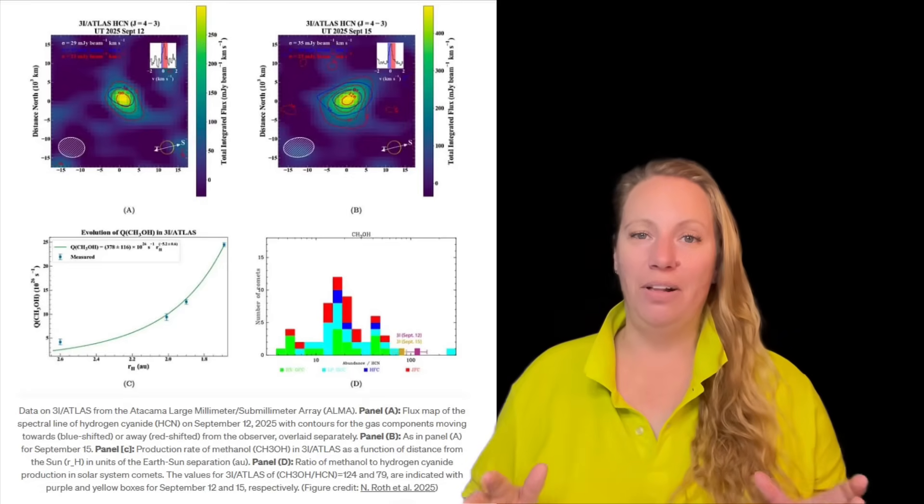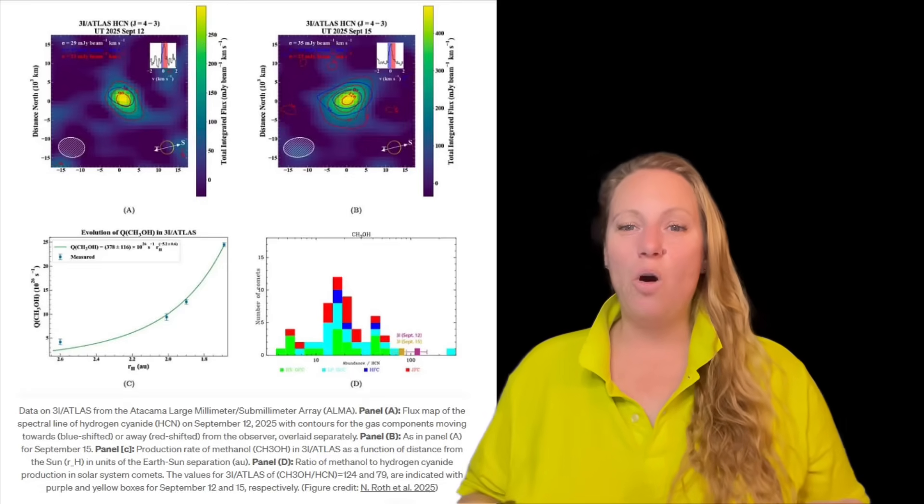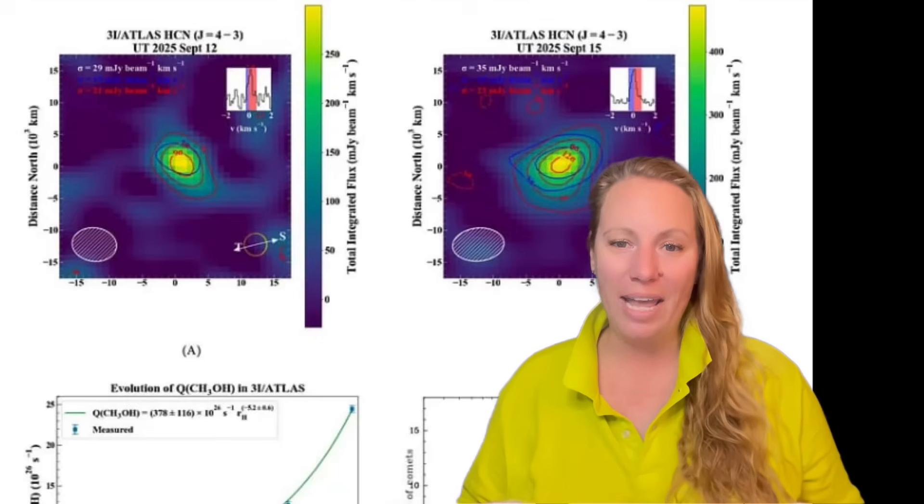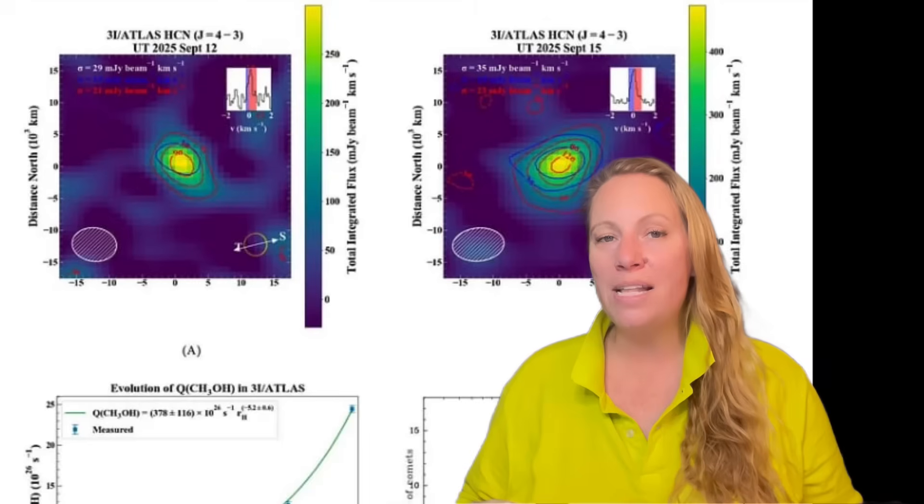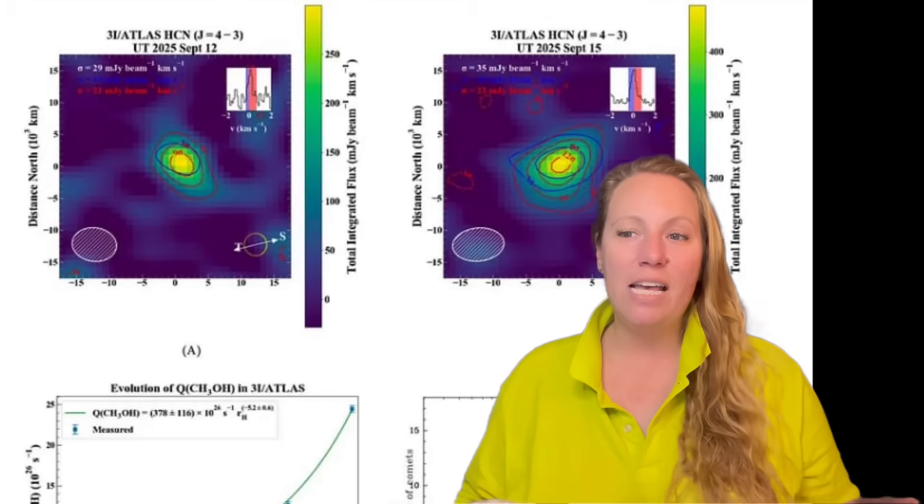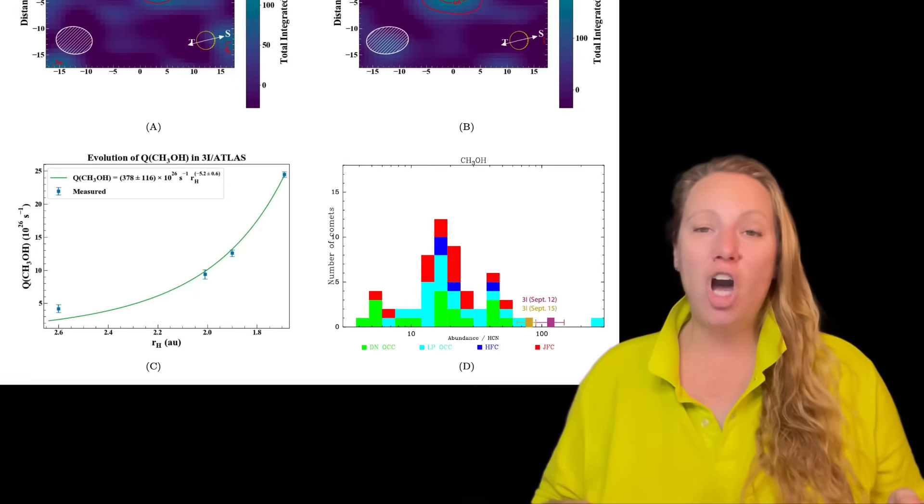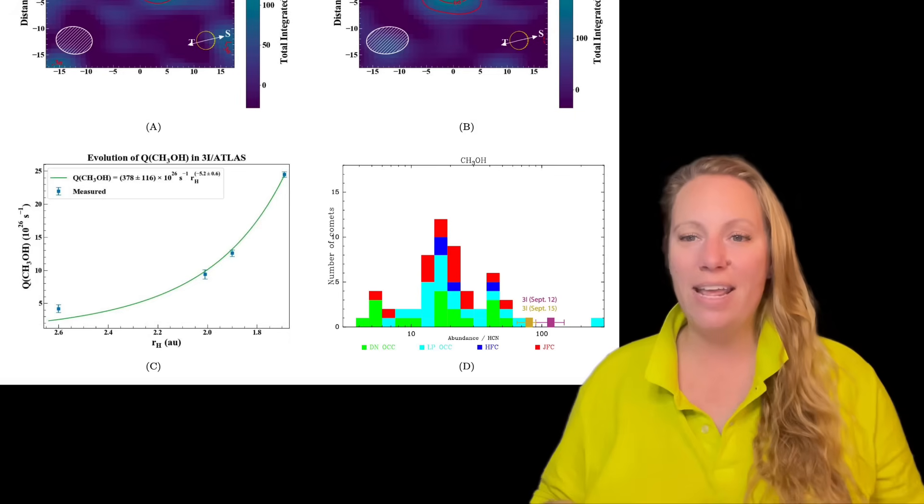Let's get back to methanol - sounds less threatening. Methanol is important because it can help build complex organic molecules, possibly even components of DNA and RNA. That's why some call 3I/ATLAS a cosmic gardener, maybe spreading life's building blocks across space. That would be a beautiful interpretation.